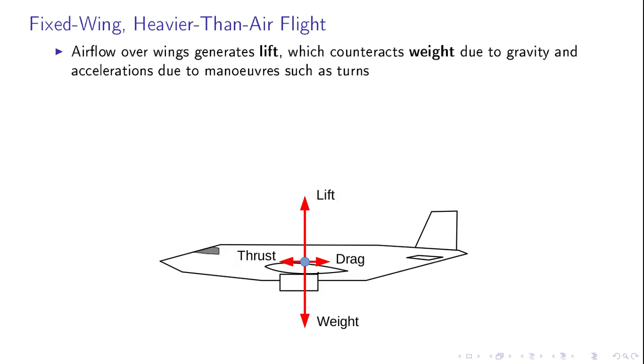So how does an airplane work? Well, air flows over the wings and this generates lift, which counteracts the weight due to gravity and accelerations due to maneuvers such as turns.